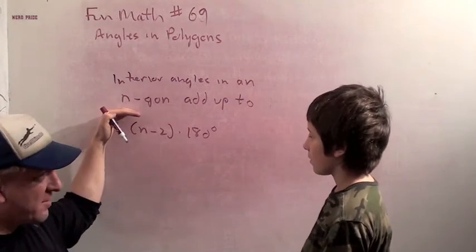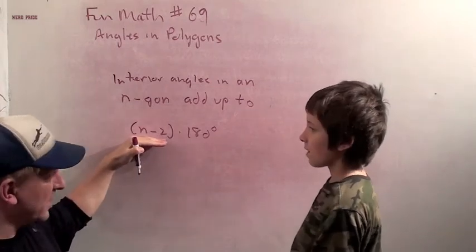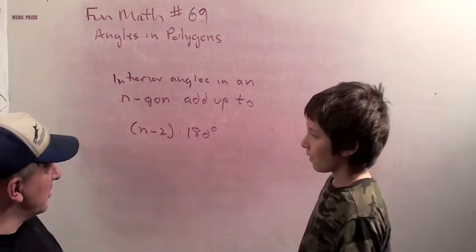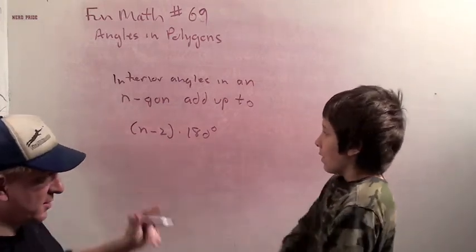For a 5-gon, which is also known as a pentagon, we have 5 minus 2, 3 times 180. So now, with that same idea, chopping it into triangles, we always have n minus 2 triangles.